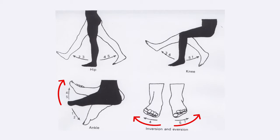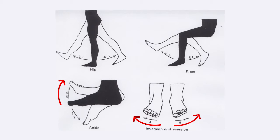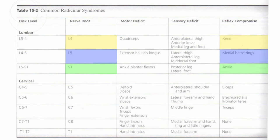As far as reflex testing is concerned, we all accept that the knee reflex is supplied by the L4 nerve root and the ankle reflex by S1. Surely there must be a reflex for L5 — and there certainly is. A number of years ago I happened to notice in table 15-2 on page 376 of the AMA 5 guides that L4 supplies the knee reflex, S1 supplies the ankle reflex, and L5 supplies the medial hamstring reflex.